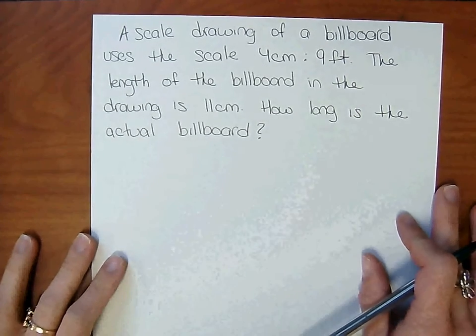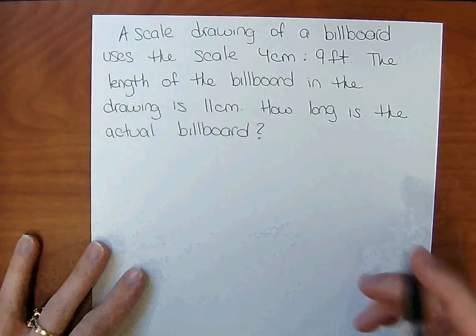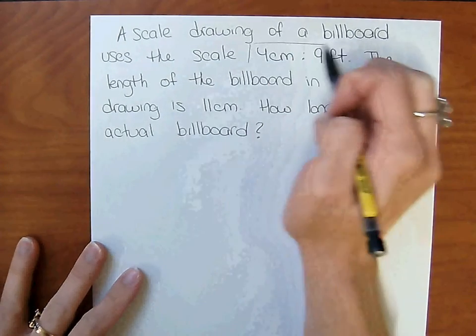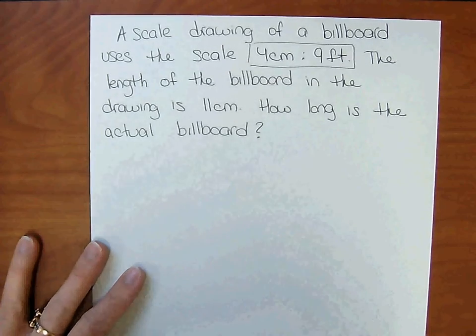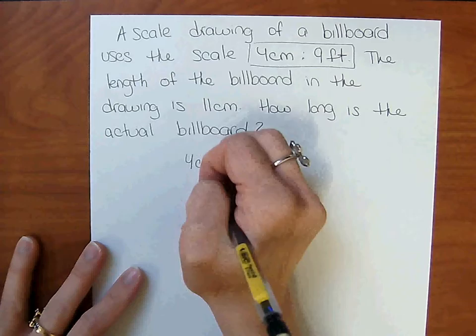Start with the fact, or the scale. 4 centimeters is equal to 9 feet. So we're going to set up a proportion: 4 centimeters, 9 feet.